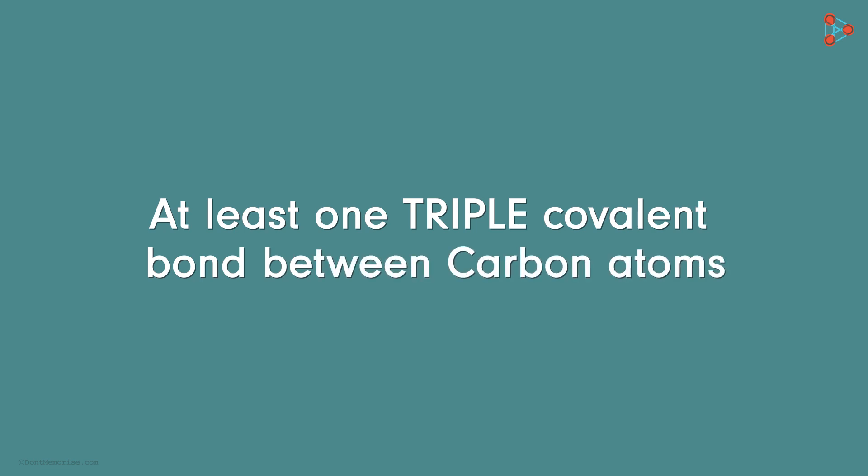Now we have the last family, which consists of members with at least one triple covalent bond between carbon atoms. These are called alkynes.